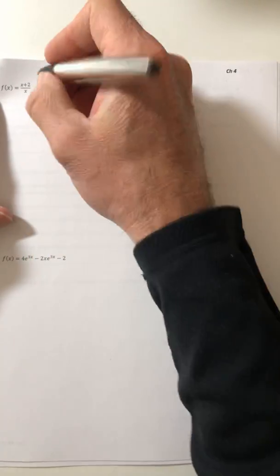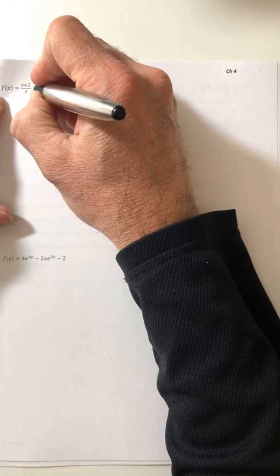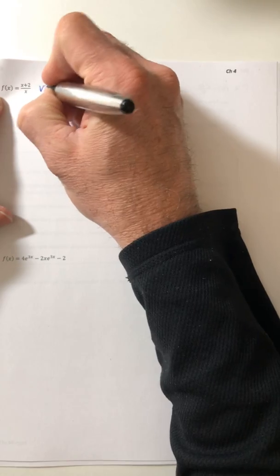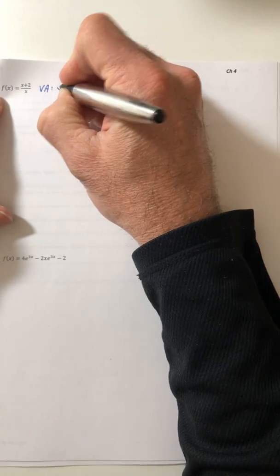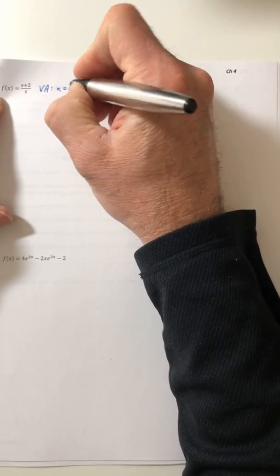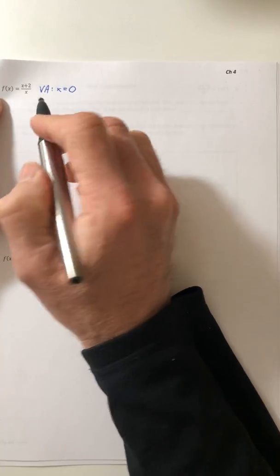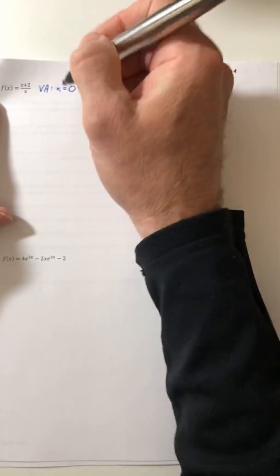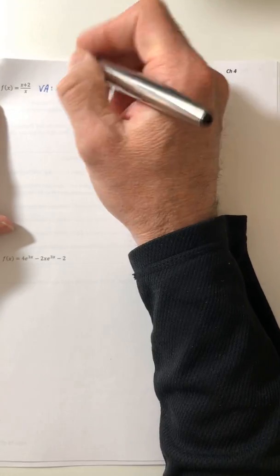So if we look at the function, there is a vertical asymptote right on x is equal to zero. You can't plug in zero, it's not part of the domain. So x equals zero is a vertical asymptote.